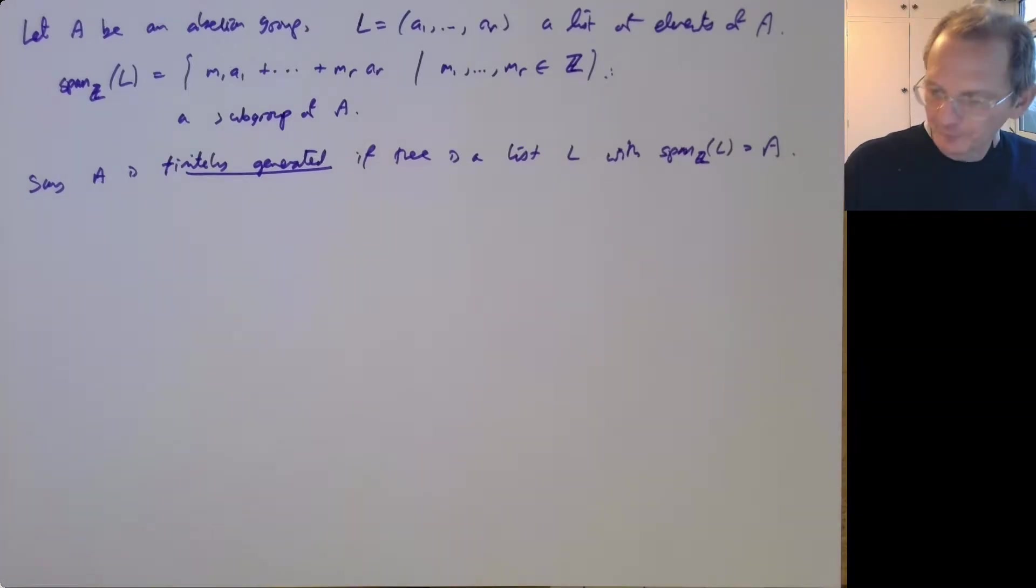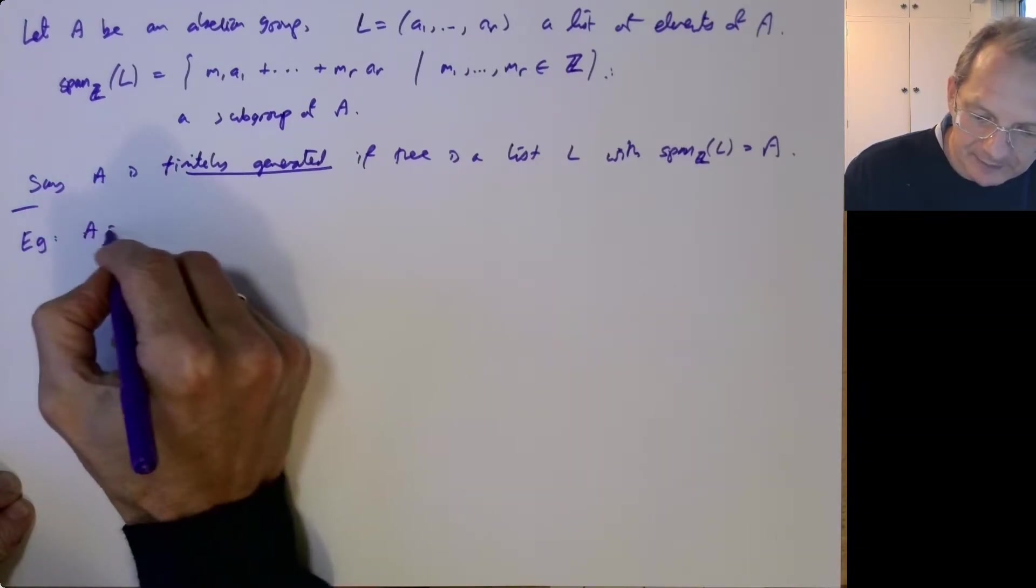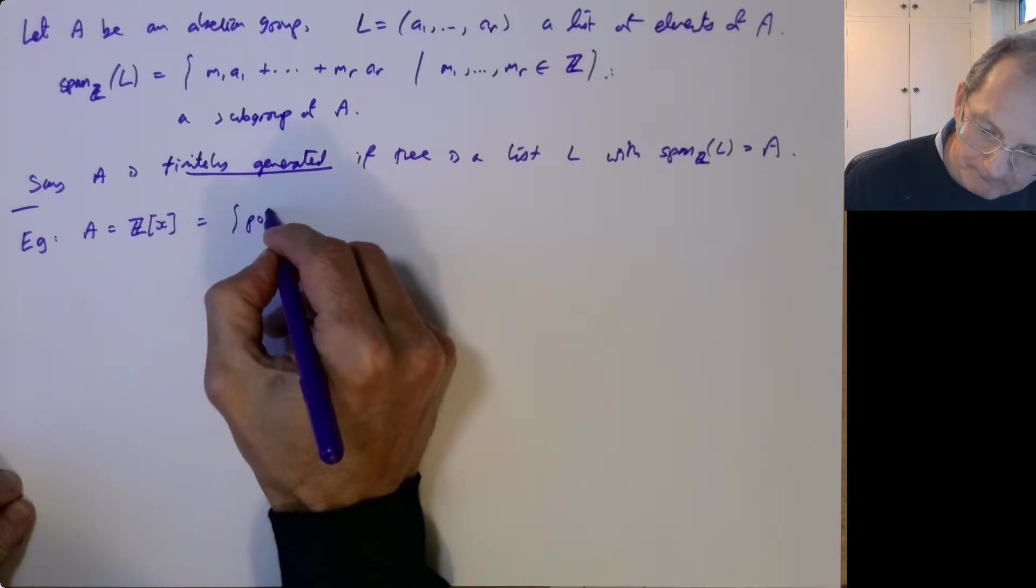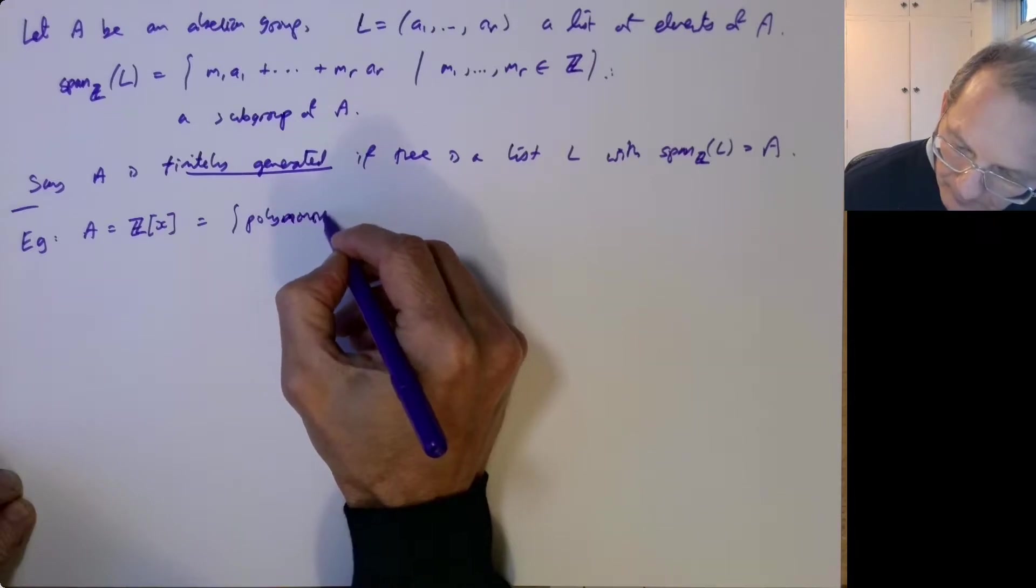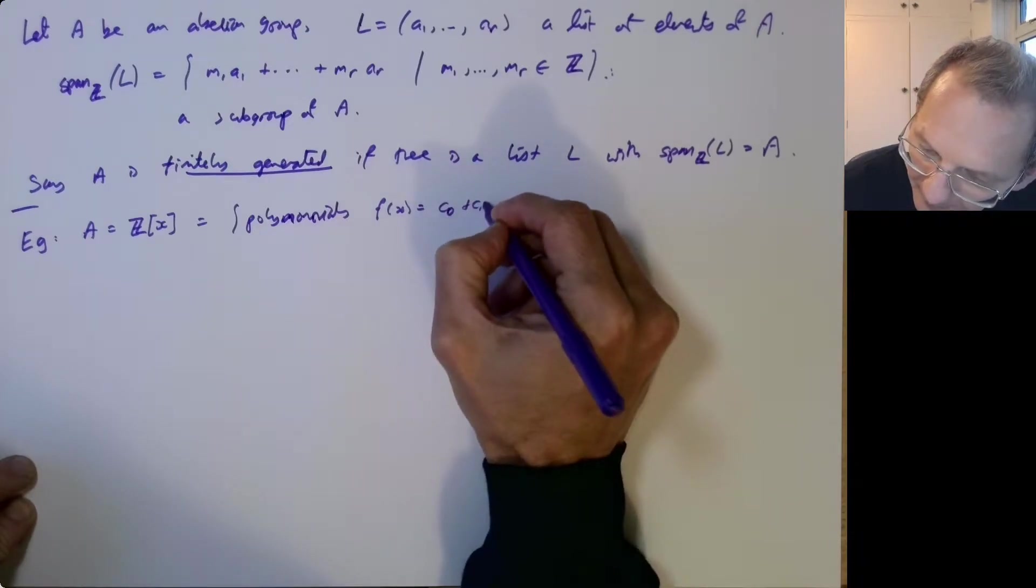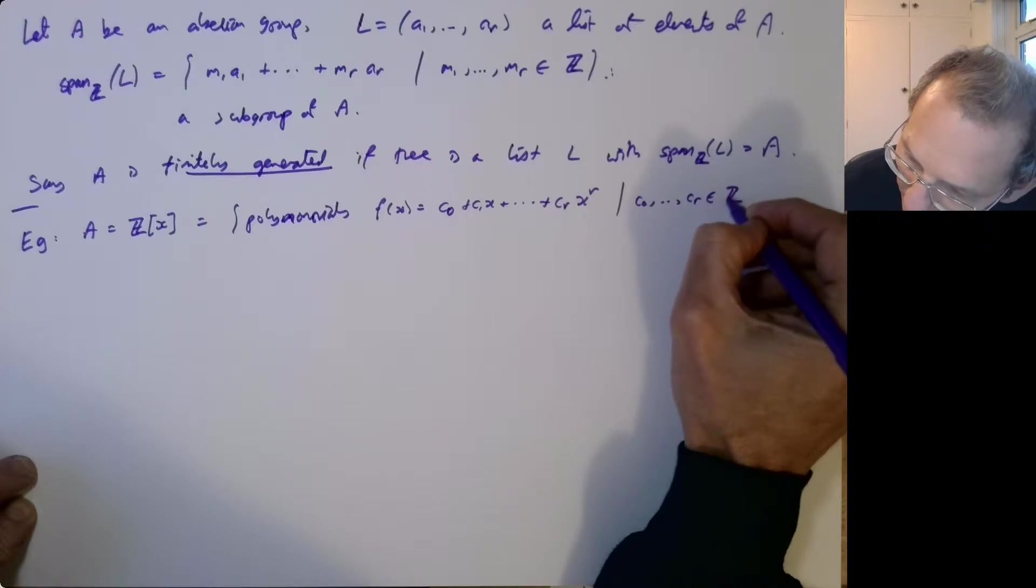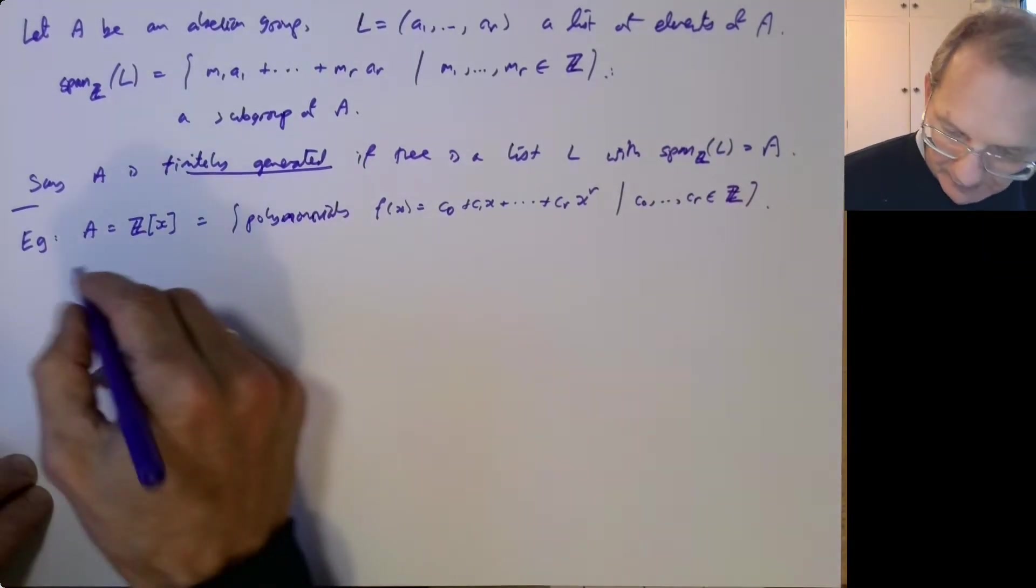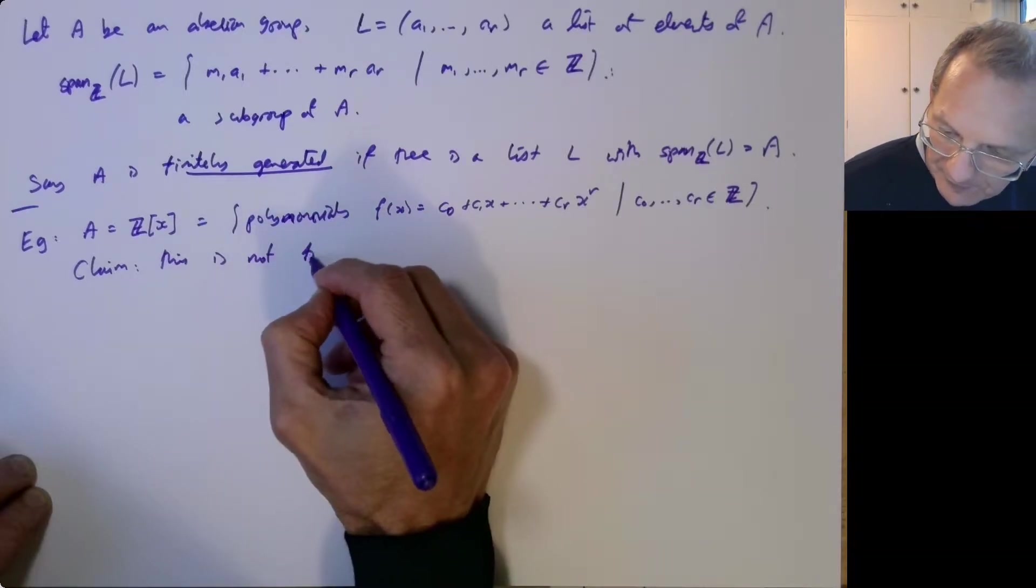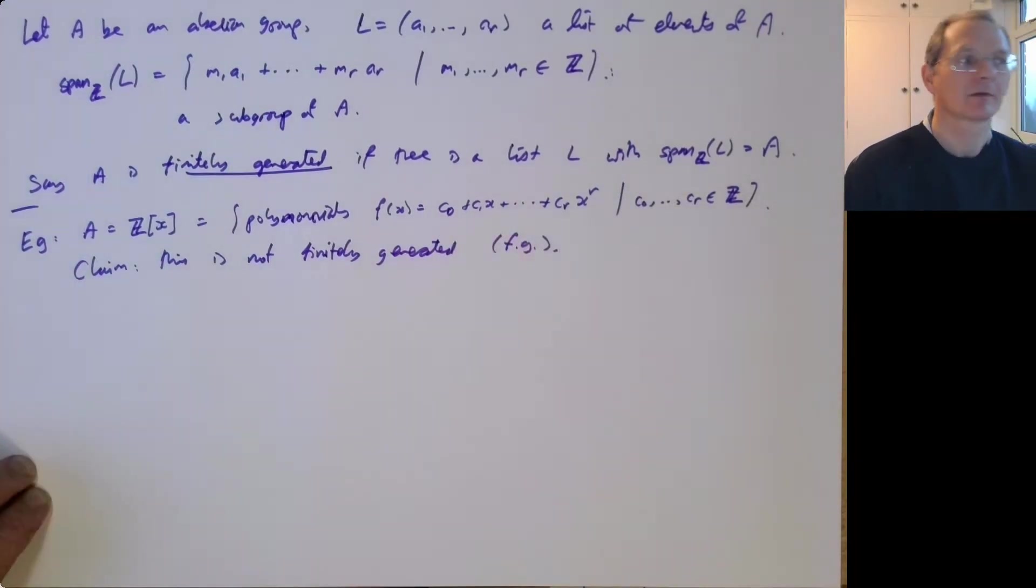So this doesn't happen automatically. Let's consider the polynomial ring Z[x], so this is the polynomials F of x like C0 plus C1x and so on with integer coefficients. I want to claim this is not finitely generated, typically just write it as FG.